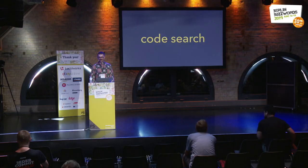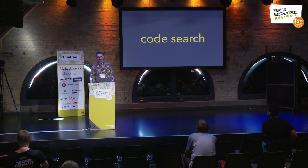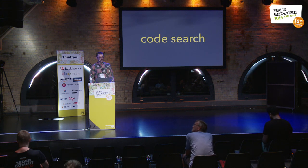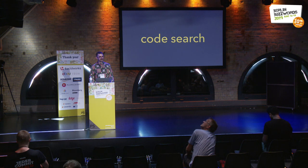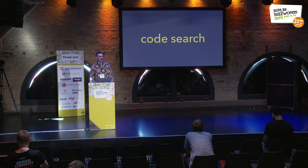Say you're in the situation where you're working at a company and there's a big existing codebase contributed to by dozens or more developers, and you want to avoid re-writing some functionality if there's already a method that handles it.